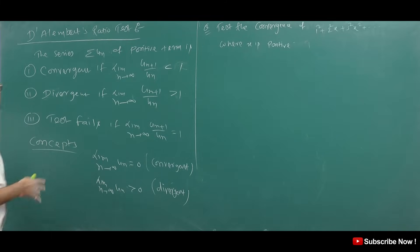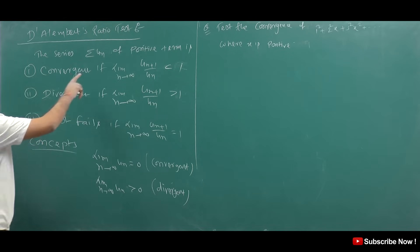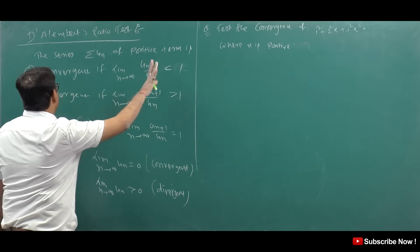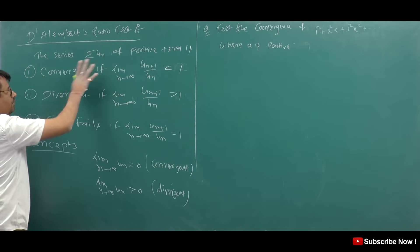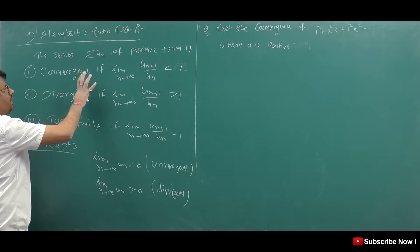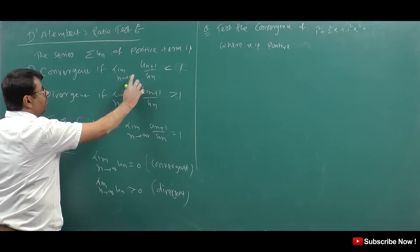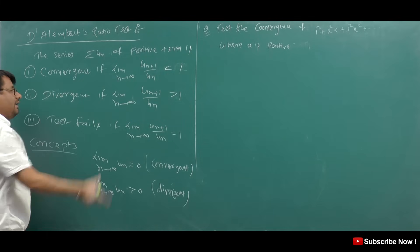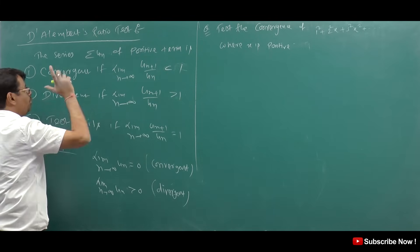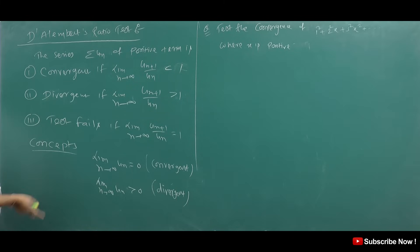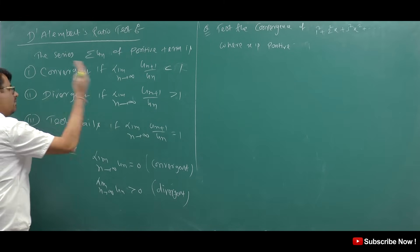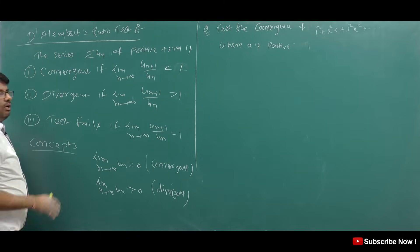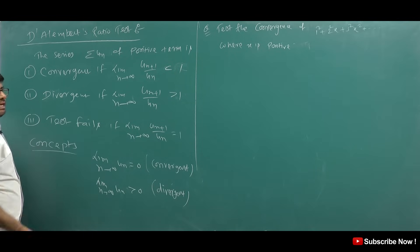What is the D'Alembert Ratio Test? The series summation u_n of positive terms is convergent if the limit as n tends to infinity of u_(n+1) upon u_n is less than or equal to 1. If it is less than 1, then it will be convergent. If it is greater than 1, then it will be divergent. And if it is equal to 1, then the test will fail.